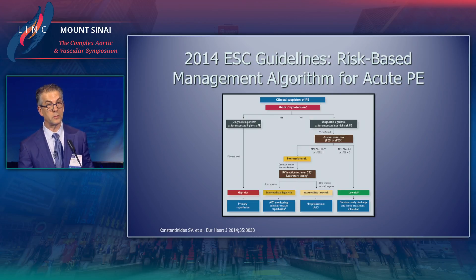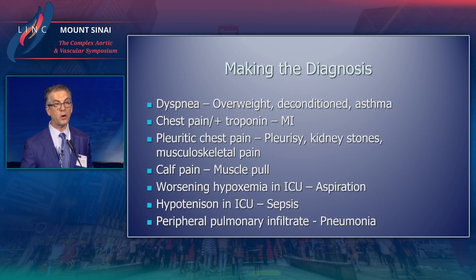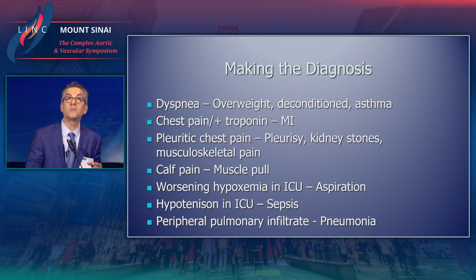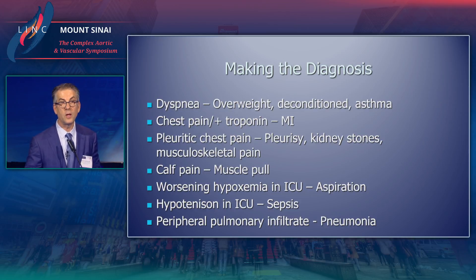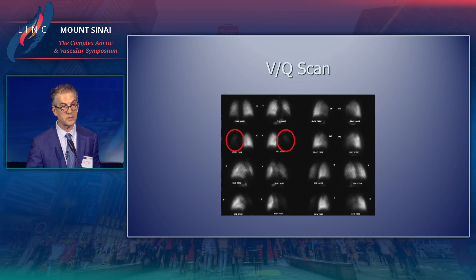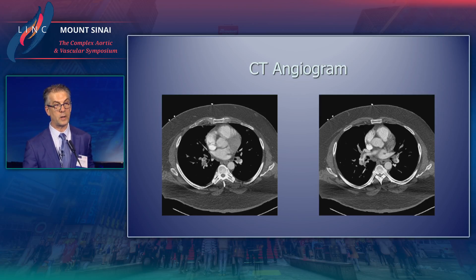There's a simple algorithm in the European guidelines for how to treat patients. Part of treating patients is actually making the diagnosis, which requires thinking of PE in the first place. A whole host of symptoms may be interpreted as other causes but actually indicate PE. For example, a hypotensive patient in the ICU — the first diagnosis people think about is sepsis, but you also need to think about PE. CT angiogram is now the most common imaging tool, providing a quick diagnostic result and an idea of RV dysfunction via the RV-LV ratio.